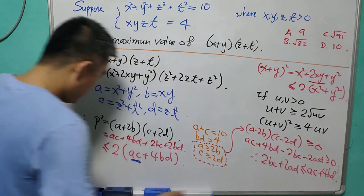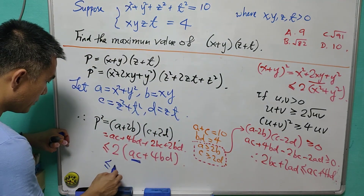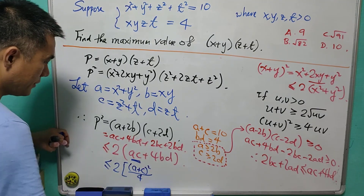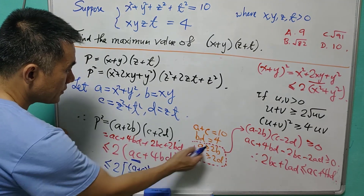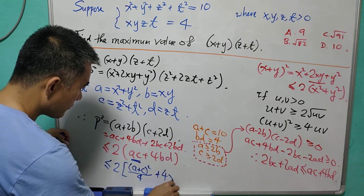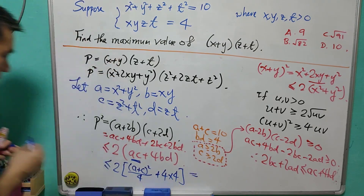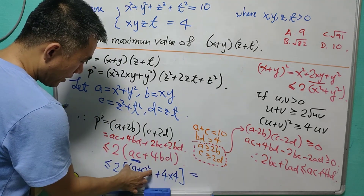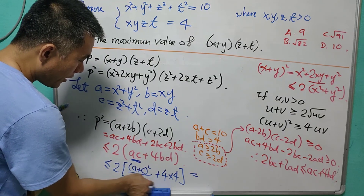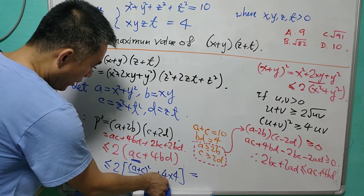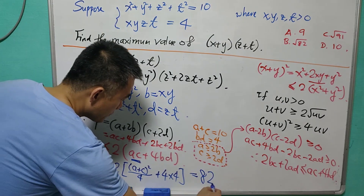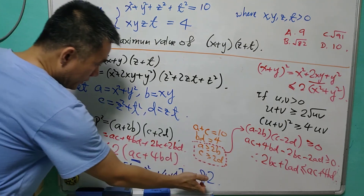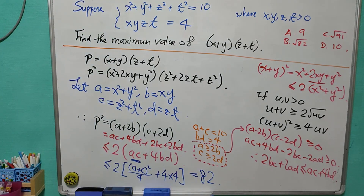Using AM-GM again, ac ≤ (a + c)²/4. Since a + c = 10, we get ac ≤ 100/4 = 25. And bd = 4, so 4bd = 16. Therefore, p² ≤ 2(25 + 16) = 2 × 41 = 82. So p² ≤ 82, meaning p ≤ √82.